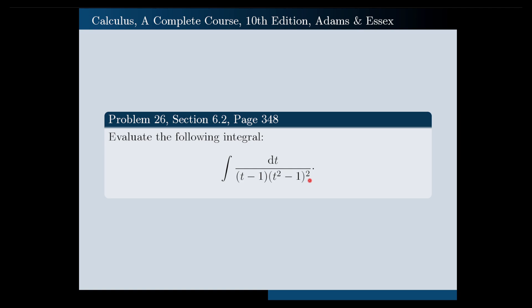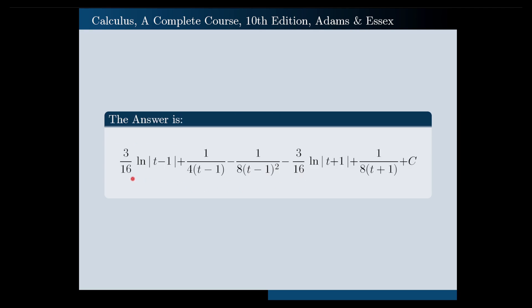If you do the calculations correctly, the answer that you will get will be 3 over 16 times ln of absolute value of (t minus 1), plus 1 over 4 times (t minus 1), minus 1 over 8 times (t minus 1) squared, minus 3 over 16 times ln of absolute value of (t plus 1), plus 1 over 8 times (t plus 1), and plus a constant c at the end.